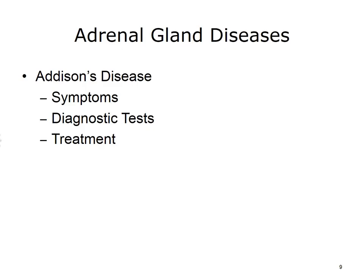Symptoms of Addison's disease include weight loss, muscle weakness, fatigue that increases over time, low blood pressure, and patchy or dark skin. Diagnostic tests such as ACTH or cortisol tests are examples of laboratory tests that help in the diagnosis of Addison's disease. The treatment is to take hormone medication for the remainder of your life.